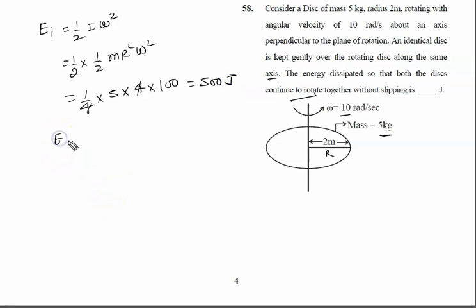Now what is the final energy? Finally there are two identical disks. So you can say half I omega square plus half I omega square, but omega will change. This is omega 2 and this is omega 1.